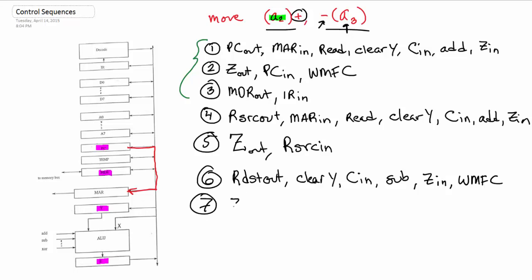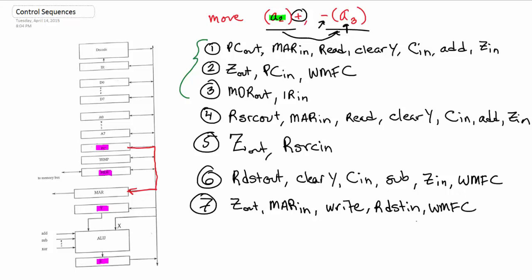Number 7: we look at what's in Z and now we can do the important stuff. We do MAR in from Z. Now we're going to write — writing from the source to the destination. Our address register is now containing the decremented address of A3, so that's where it's going. Then we toss that back into the destination so the next guy can use the proper address. And again, wait memory function complete, because it would be an awful tragedy if we started using the wrong address.